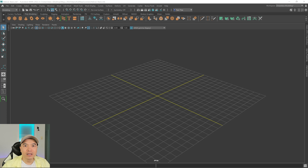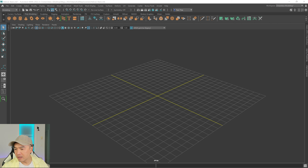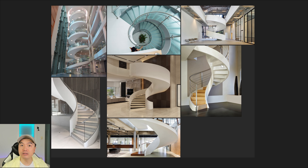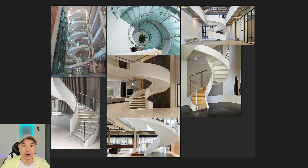Welcome back everyone. In today's tutorial we're going to model a spiral staircase in a helical style. I have some images of helical stairs and you can see that it looks a little bit different than the regular spiral staircase in that it's missing a central column — some of them do have one but it's usually not dependent on it for structural purposes.